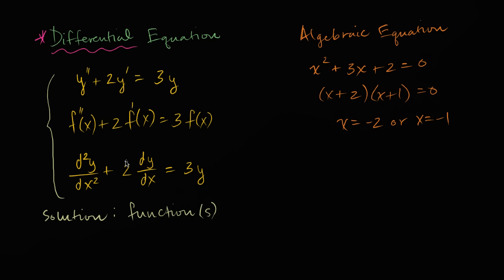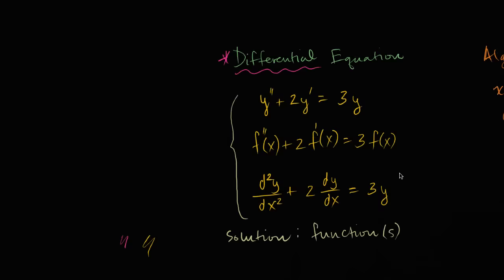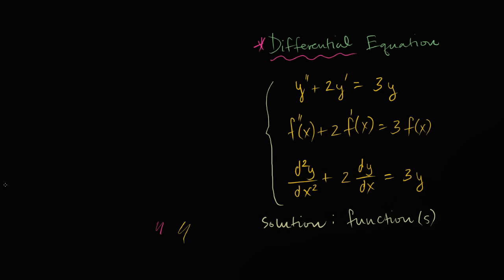Now let's make that a little bit more tangible. What would a solution to something like any of these three — which really represent the same thing — what would a solution actually look like? I'm going to give you examples of solutions here. We'll verify that these indeed are solutions, but hopefully you can appreciate what a solution to a differential equation looks like, and that there is often more than one solution — a whole class of functions that could be a solution.